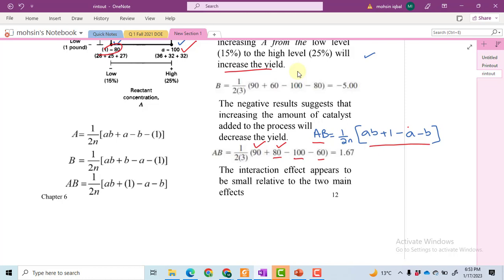We got the AB effect equal to 1.67, which means the interaction effect is found to be positive. The interaction effect appears to be small relative to the main effects.